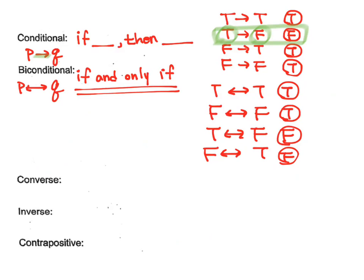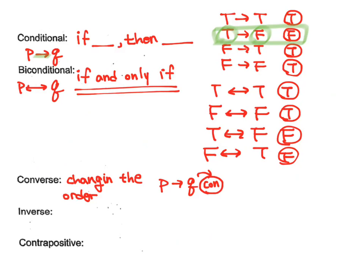Alright, we're going to have more practice questions coming up very soon. Converse — what does it mean? Converse is switching, or you can say changing the order. In other words, if I have P then Q, the converse of that statement would be Q then P. Notice that I switched the order.